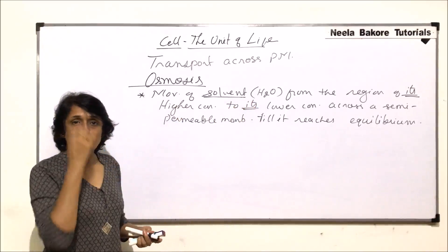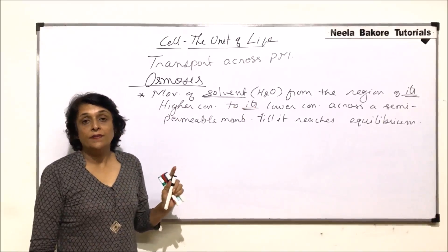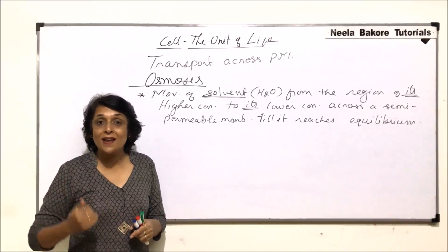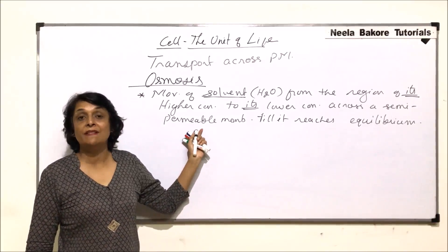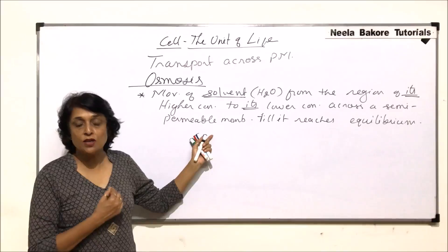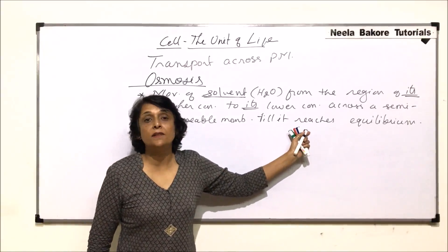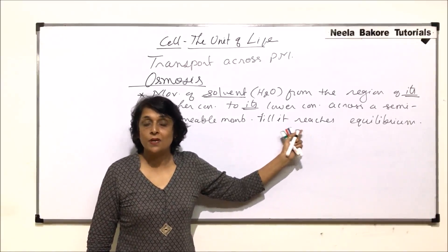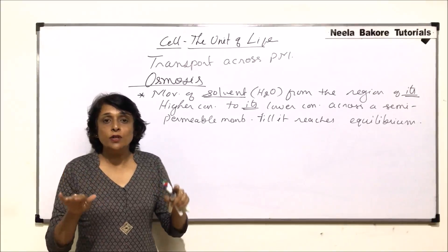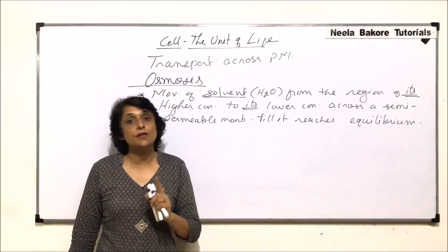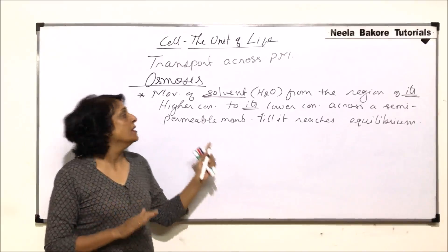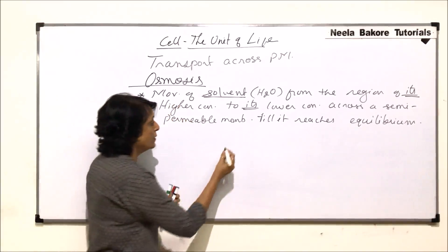In osmosis, it is the movement of solvent or water molecules from the region where the concentration of water is more to the region where concentration of water is less, across a semi-permeable membrane. This movement takes place till it reaches equilibrium, because it is a passive transport and passive transport is never 100%. When the concentration is the same in both compartments, there is no gradient, so the net movement of particles stops.